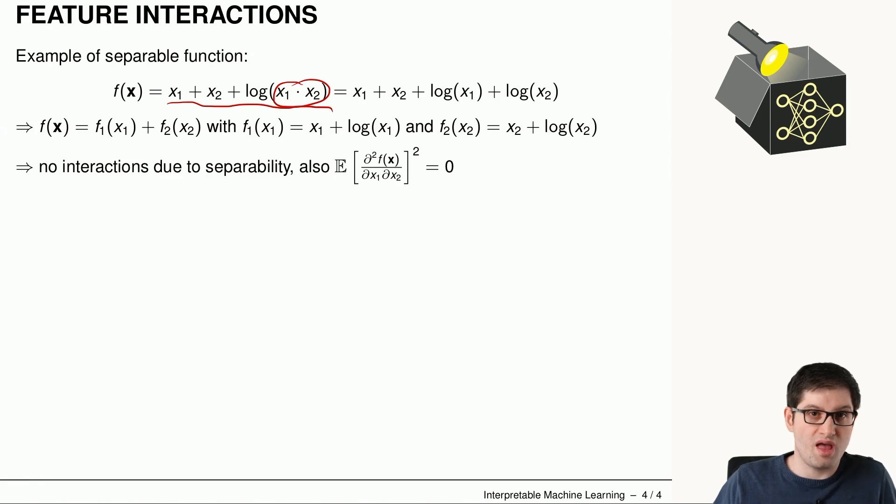this is a function that does not have any interaction according to the definition we have looked at. And the reason is the following. Using the rules of the logarithm, we can write down this product as a sum of the logarithm of x1 and the logarithm of x2. Doing so, we are able to separate the function into one part that only depends on x1 and another part that only depends on x2. This means that we don't have interactions in this function here.